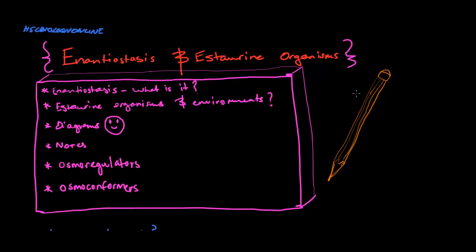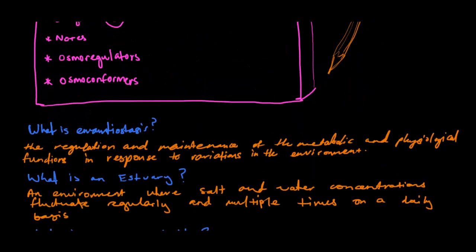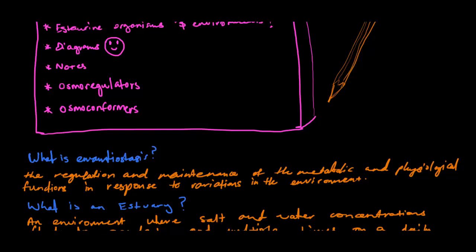Hey everyone, today I'm going to be talking about enantiostasis and estuarine organisms. First off, what is enantiostasis? Enantiostasis is the regulation and maintenance of the metabolic and physiological functions in response to variations in the environment.